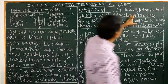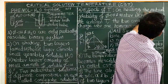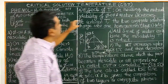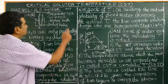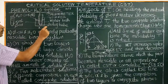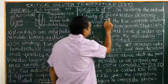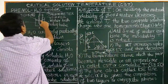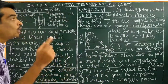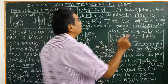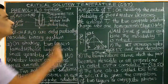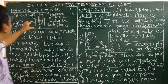On heating and increasing the temperature, the mutual solubility of phenol in water and water in phenol increases. According to the temperature, the two conjugate solutions change into one homogeneous layer — one homogeneous solution.